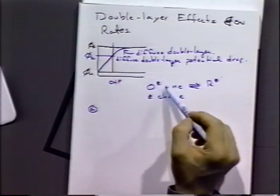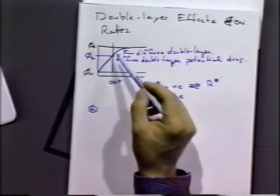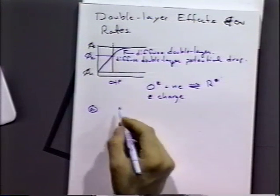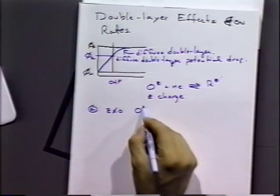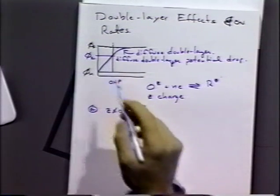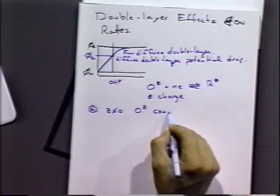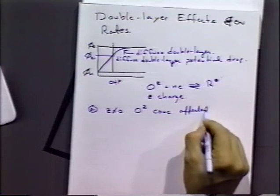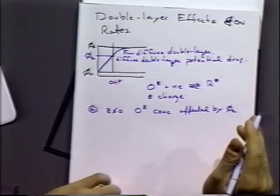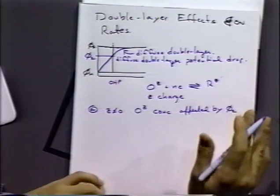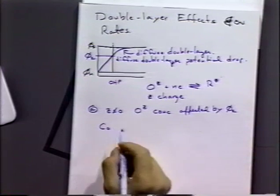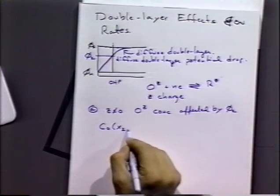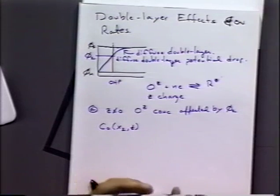Because there is a potential here, the charge of the molecule will be affected by the phi-2 potential at that phi-2 point. If Z is not equal to zero, the concentration of O^Z at the point of electron transfer will be affected by the phi-2 potential. This is often referred to as a Frumkin effect, after the Russian electrochemist Frumkin who first developed the theory. The concentration of O at the electrode surface at the point of electron transfer is usually assumed to be at phi-2, because we're talking about a molecule moving in to take an electron at the outer Helmholtz plane.